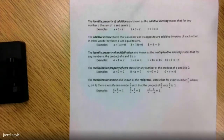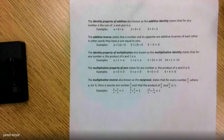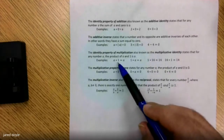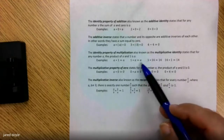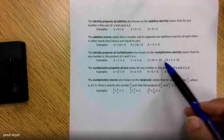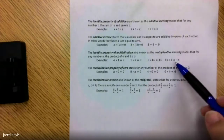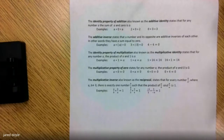The next property is the identity property of multiplication, also known as the multiplicative identity. This states that for any number a, the product of a and one is a. So a times one is a, one times a is a, one times fourteen is fourteen, and fourteen times one is fourteen. In a nutshell, any number times one is itself.